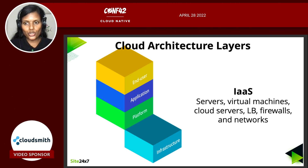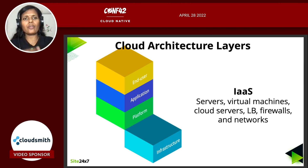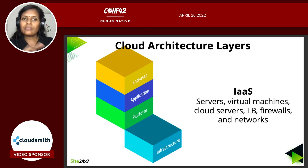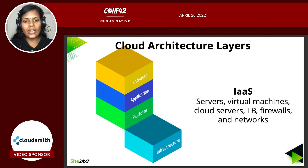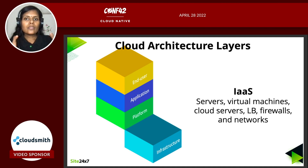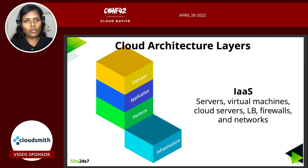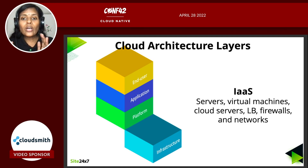The bottom-most is your infrastructure layer, which comprises physical servers, virtual servers, cloud servers, load balancers, firewalls, routers, switches, and the entire network — all forming the infrastructure layer. Infrastructure-as-a-service is a model available for this. The reason I'm talking about all four layers is that in a cloud architecture, even though you are mostly worried about your application, the IT administrator, DevOps, or SRE has to have a complete picture of what is happening in all these layers.